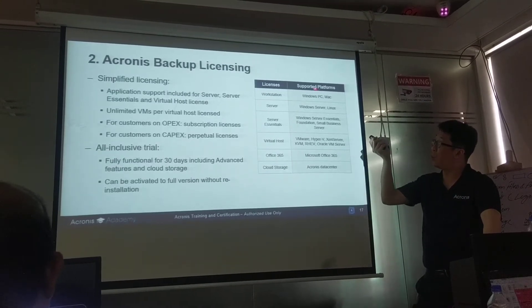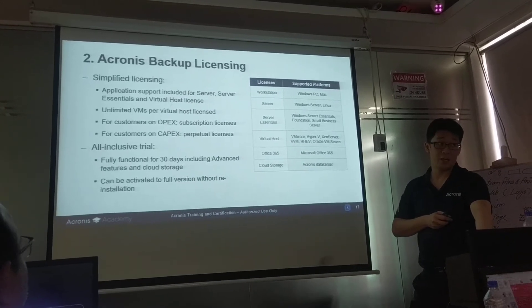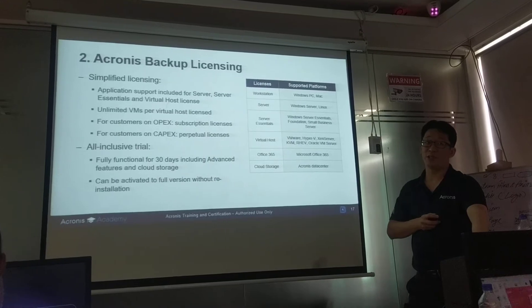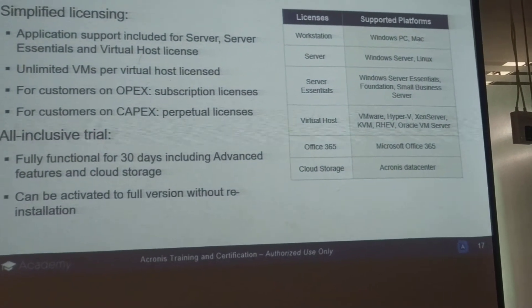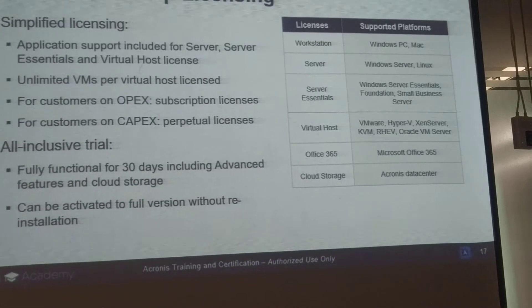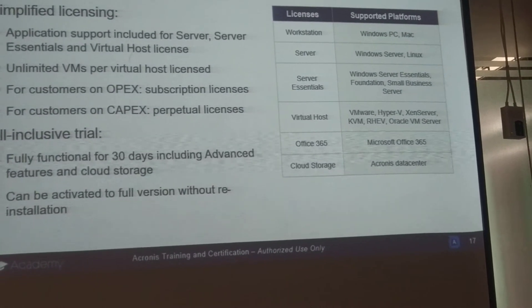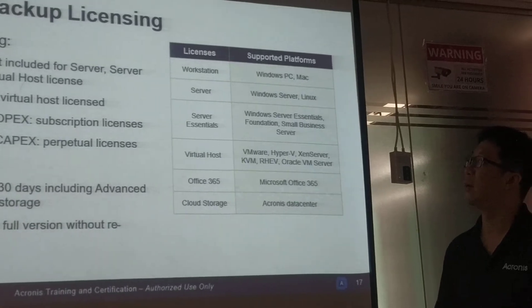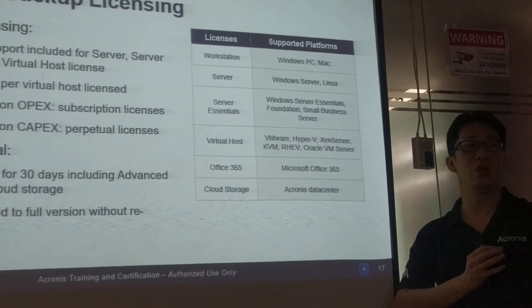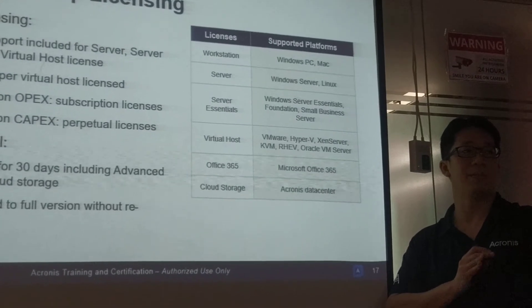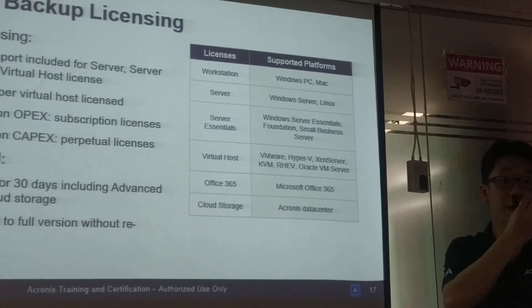Workstation is for Windows desktop operating systems — Windows 7, Windows 8, Windows 10, and even Windows XP, although for Windows XP you need Service Pack 3. It also covers Mac: one Mac, one license; two Macs, two licenses. For the Server license it's Windows Server OS — Server 2003, 2008, 2012, 2016, 2019 — one to one. Any Linux is also licensed as a server. So even Linux desktops, while rare, are unfortunately licensed as server.